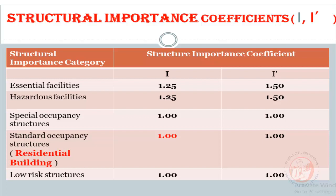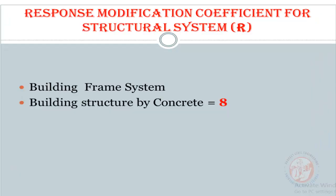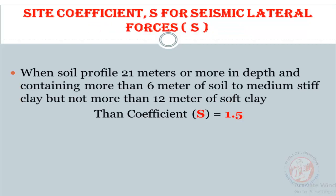Now I am finding out the structural importance coefficient I. For a residential building, the structural coefficient value is 1. The response modification coefficient for the structural system R, the building frame system with concrete construction, is equal to 8. And the site coefficient for seismic lateral forces S equals 0.5.